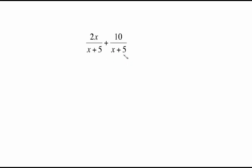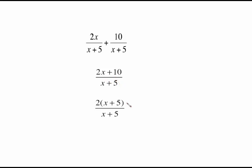Here's another one with a common denominator of x plus 5, so we just keep that common denominator and add the numerators together. They are not like terms so we get 2x plus 10. Now you might think you're finished, but think back to simplifying rational expressions — you have to factor anything on top or bottom that could potentially cancel. Factor a 2 out of the top and you get the same x plus 5 in top and bottom; cancel them out and the answer is 2.